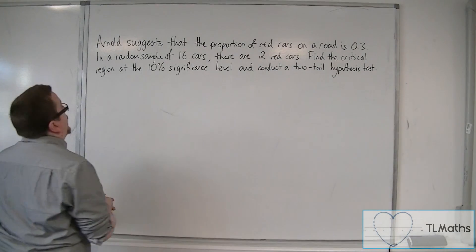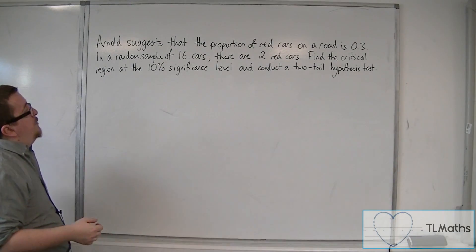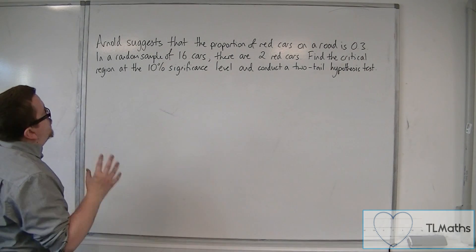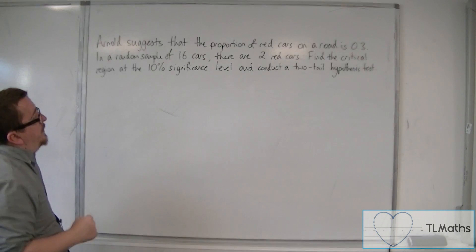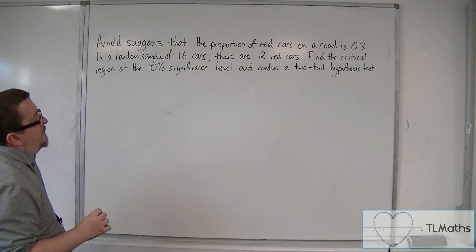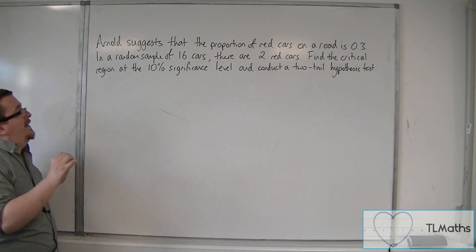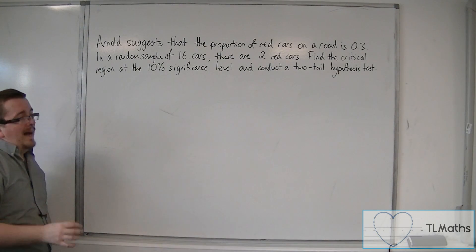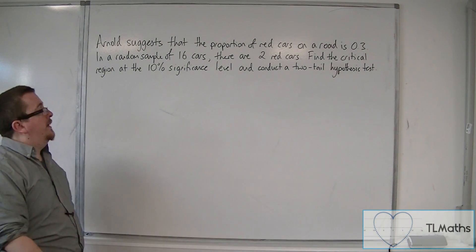Arnold suggests that the proportion of red cars on a road is 0.3. In a random sample of 16 cars, there are two red cars. Find the critical region at the 10% significance level and conduct a two-tailed test.